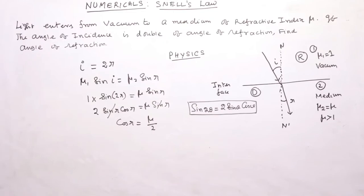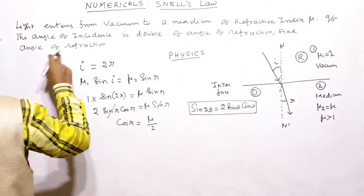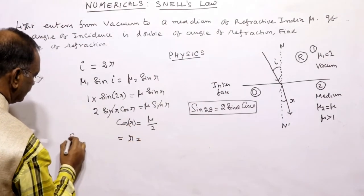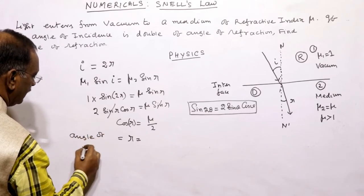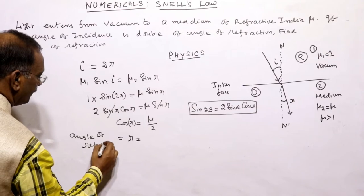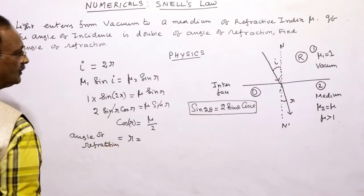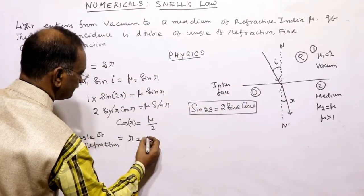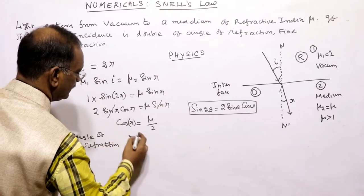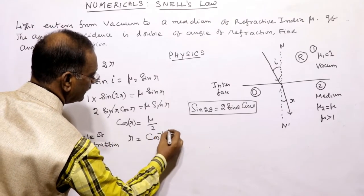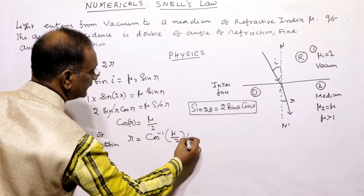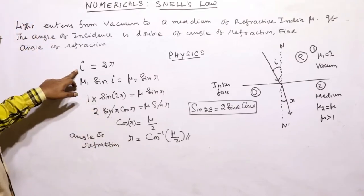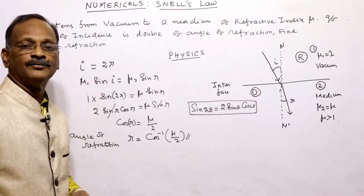After cancellation, cos(r) = mu/2. Since we are asked to find the angle of refraction r, the angle of refraction is r = cos⁻¹(mu/2). This is the angle made by the refracted ray with the normal when the angle of incidence is double the angle of refraction.